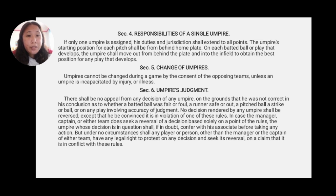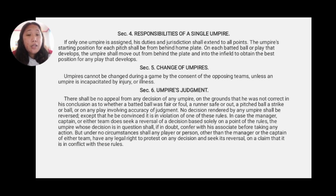Section 5: changes of umpires. Umpires cannot be changed during a game by the consent of opposing teams, unless the umpire is incapacitated by injuries or illness. Section 6: the umpire's judgment. There shall be no appeal from any decision of any umpire on the grounds that he was not correct in his conclusion as to whether a batted ball was fair or foul, a runner safe or out, a pitch a ball or a strike, or any matter involving accuracy of judgment. No decision rendered by any umpire shall be reversed except when he is convinced it is in violation of one of these rules.